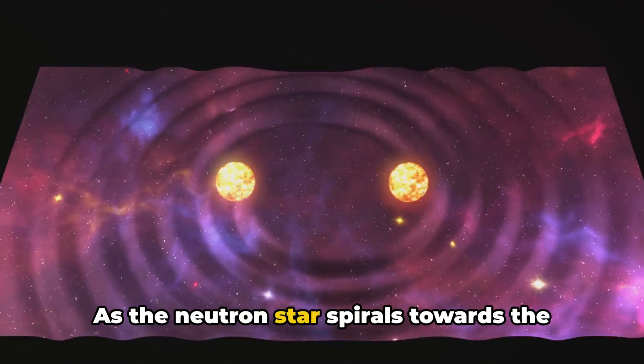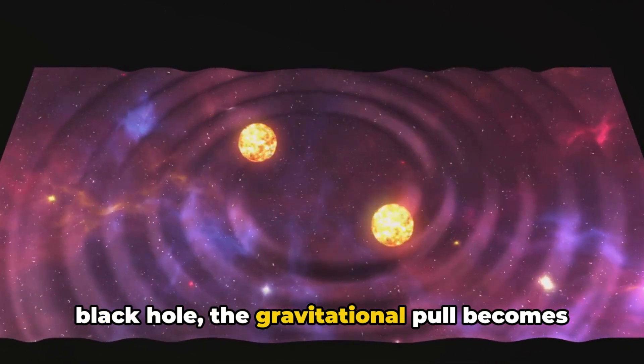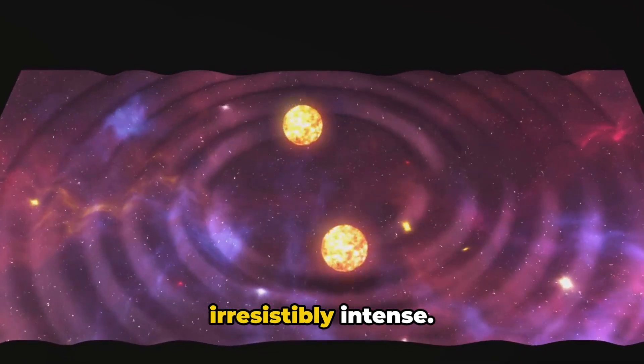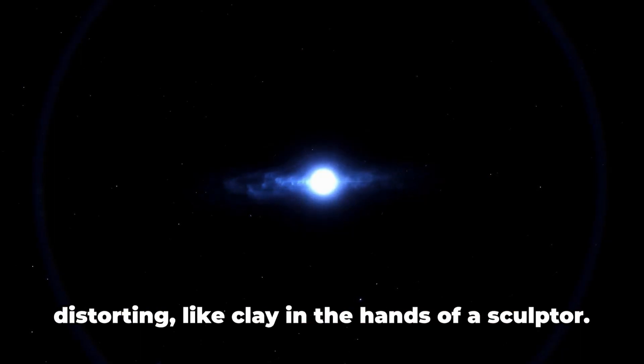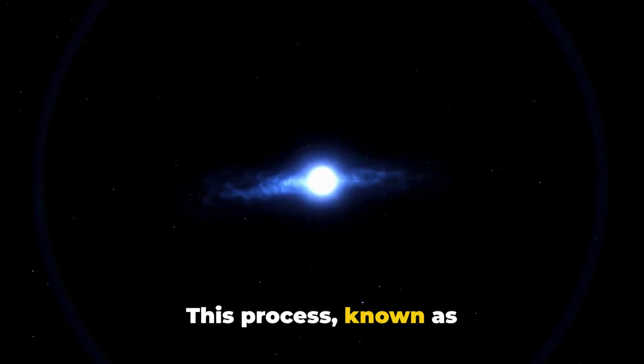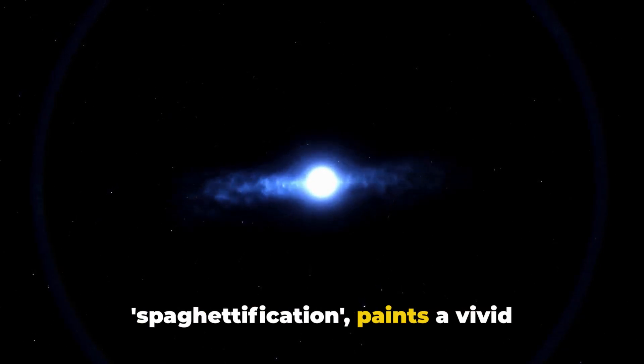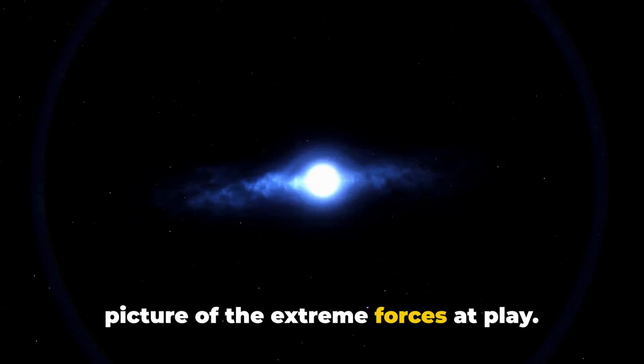As the neutron star spirals towards the black hole, the gravitational pull becomes irresistibly intense. The neutron star starts stretching and distorting, like clay in the hands of a sculptor. This process, known as spaghettification, paints a vivid picture of the extreme forces at play.